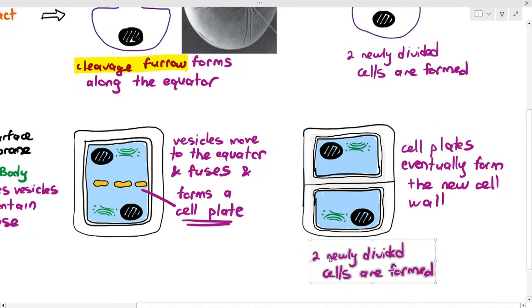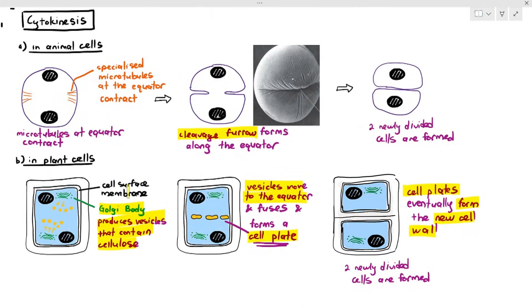After they mature, they will form the new cell wall, and the new cell wall formed in the equator will divide the two plant cells. Because of the new cell wall that forms at the equator, there are now two cells instead of one. That's how you get two newly divided cells. This is the difference between animal cell cytokinesis and plant cell cytokinesis. I hope you understand this.